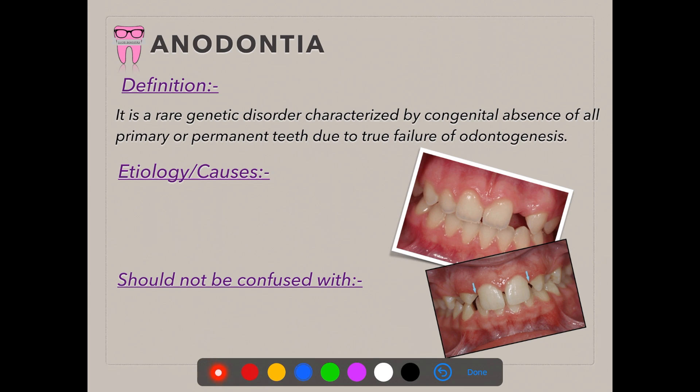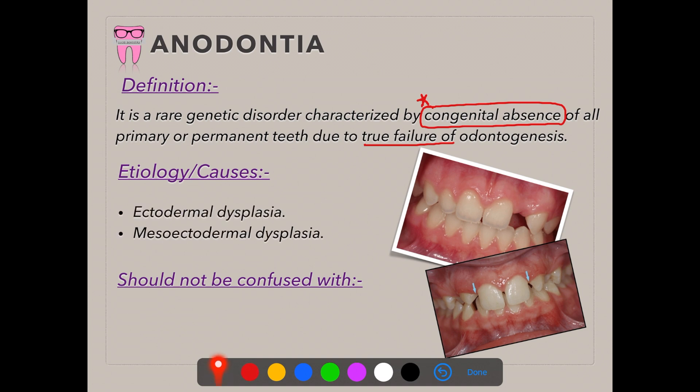The most important aspect of the definition is congenital absence — the teeth are not present at all; the patient's metabolism fails to form teeth. The causes are ectodermal dysplasia and mesoectodermal dysplasia. Ectodermal dysplasia is not a single disorder but a combination of genetic syndromes affecting all structures derived from the ectoderm, such as hair and teeth. In mesoectodermal dysplasia, structures derived from both mesodermal and ectodermal layers are affected, resulting in faulty or absent development of those structures.